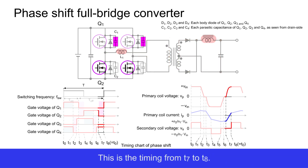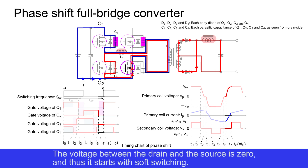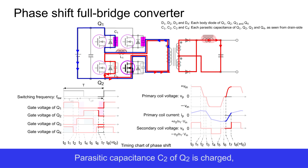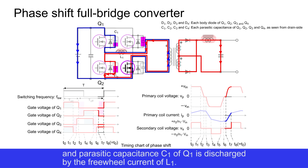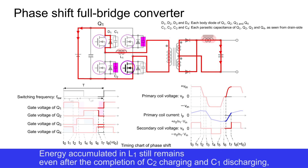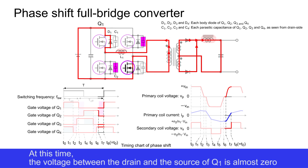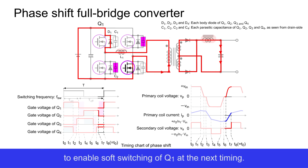This is the timing from T7 to T8. Q2 is turned off. The voltage between the drain and source is zero, and thus it starts with soft switching. Parasitic capacitance C2 of Q2 is charged and parasitic capacitance C1 of Q1 is discharged by the freewheel current of L1. Energy accumulated in L1 still remains even after the completion of C2 charging and C1 discharging, and it flows via the body diode D1 of Q1. At this time, the voltage between the drain and source of Q1 is almost zero, enabling soft switching of Q1 at the next timing.